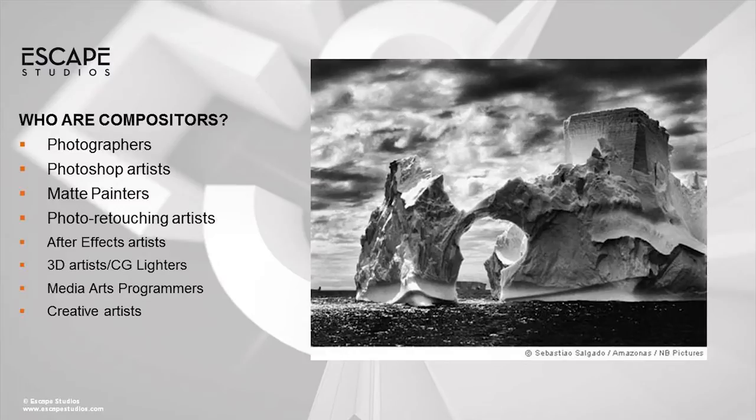Photoshop artists as well — classically you're layering things, bringing all different elements together from all different sources. That idea of integrating and imitating what a lens shoots is very important. Your objective as a compositor is to get all of those elements to really match together and seem like they were actually photographed in real life at the same time — even if it's an alien, it still has to be believable for the audience to buy that shot.